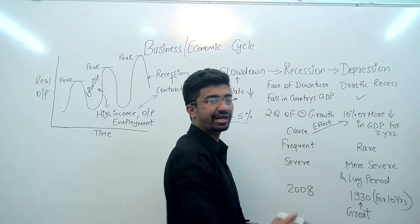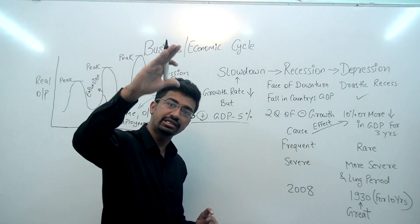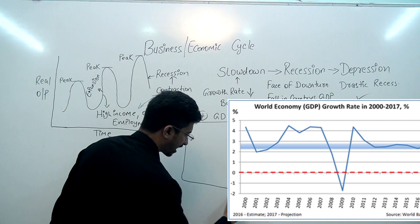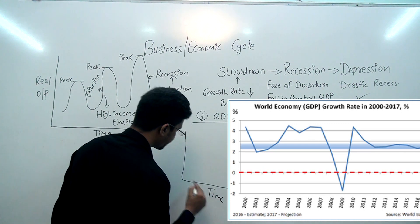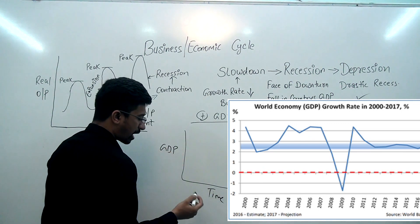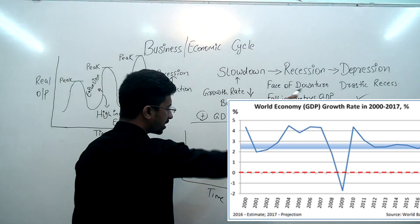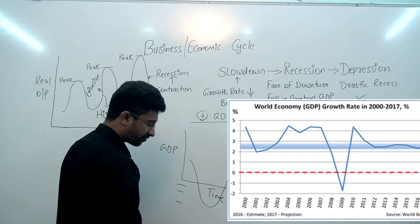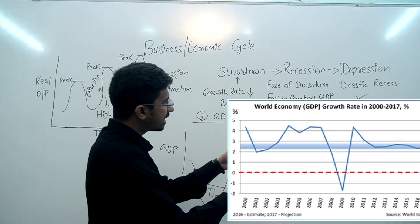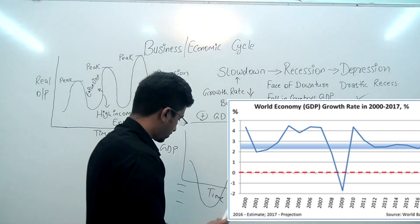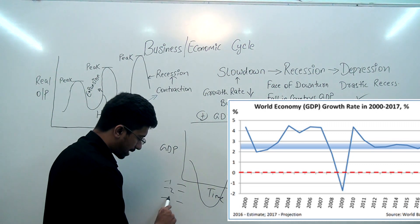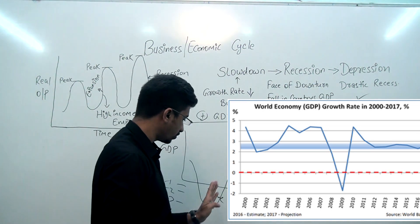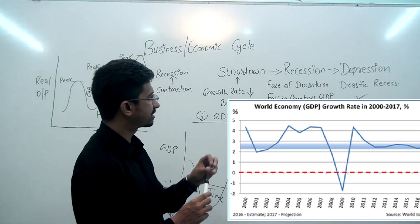Now for recession or depression, you will see that the growth rate goes below zero — it becomes negative. If I draw a graph here with time on one axis and GDP on the other, you will see that in recession or depression, the GDP goes down like this — meaning into negative territory. Now how far negative does it go? Minus 1, minus 2, minus 3, and so on.